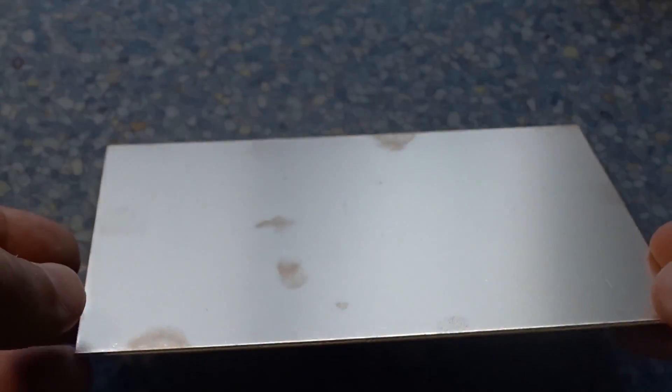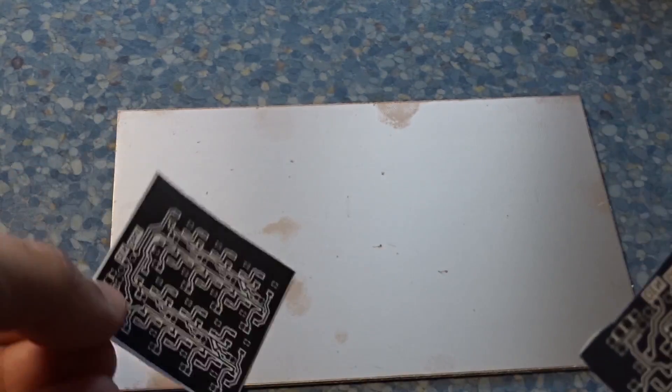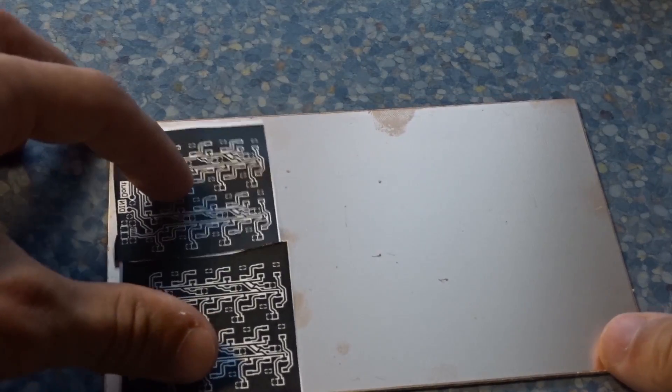First we need laminated copper sheet that you can find in your local electronic shop or even buy it from eBay for cheap. I already prepared my custom LED design and printed on a glossy sheet of paper with a laser printer. Inkjet type printers won't work.